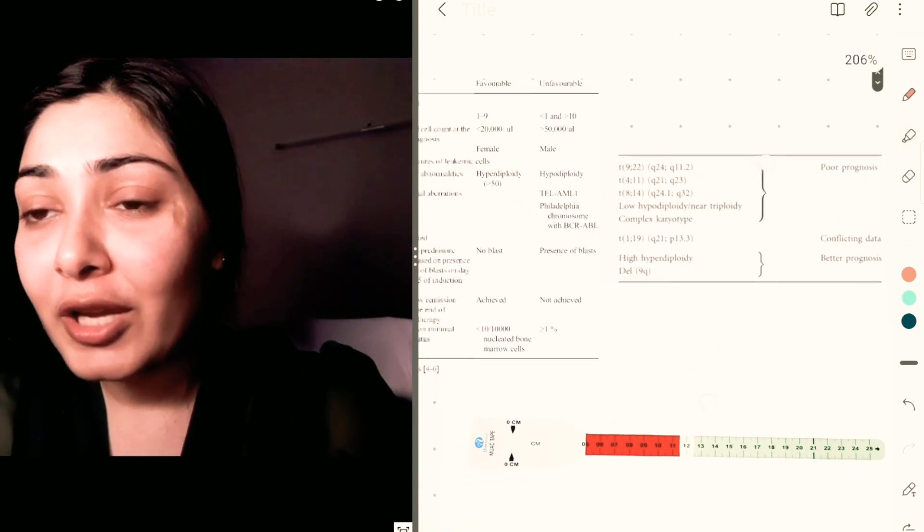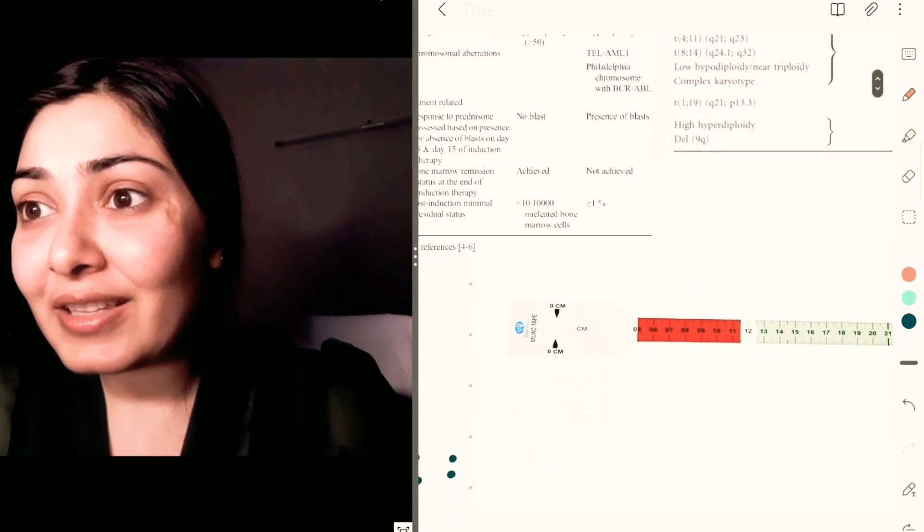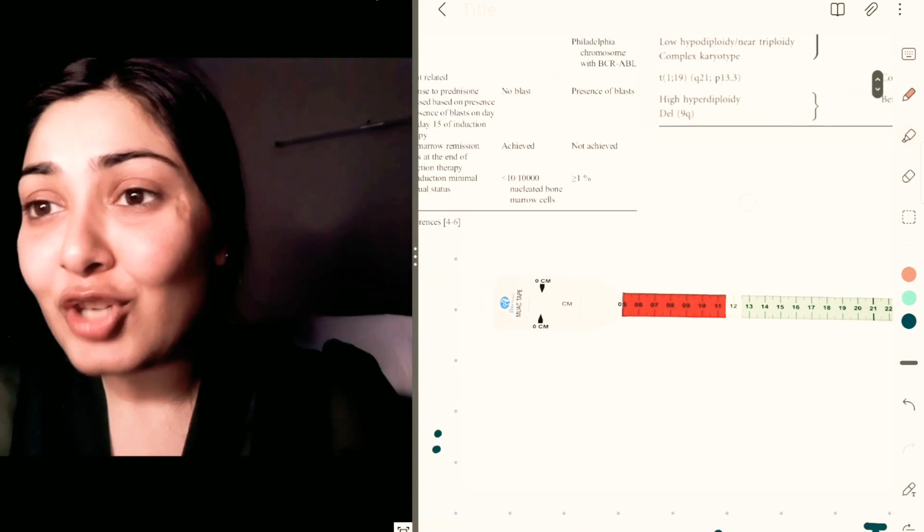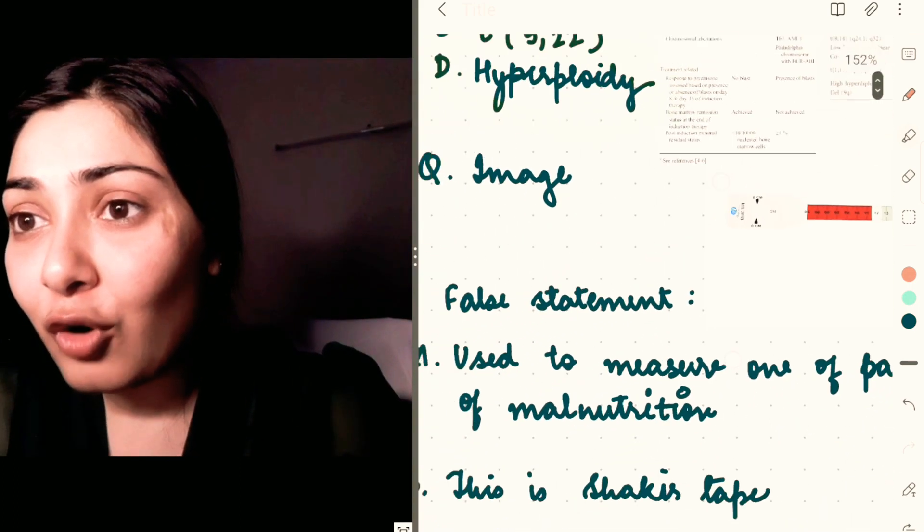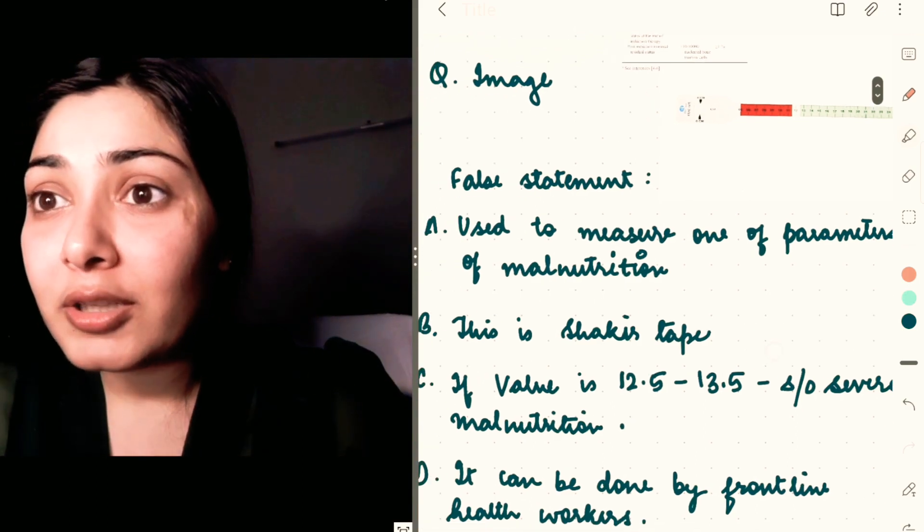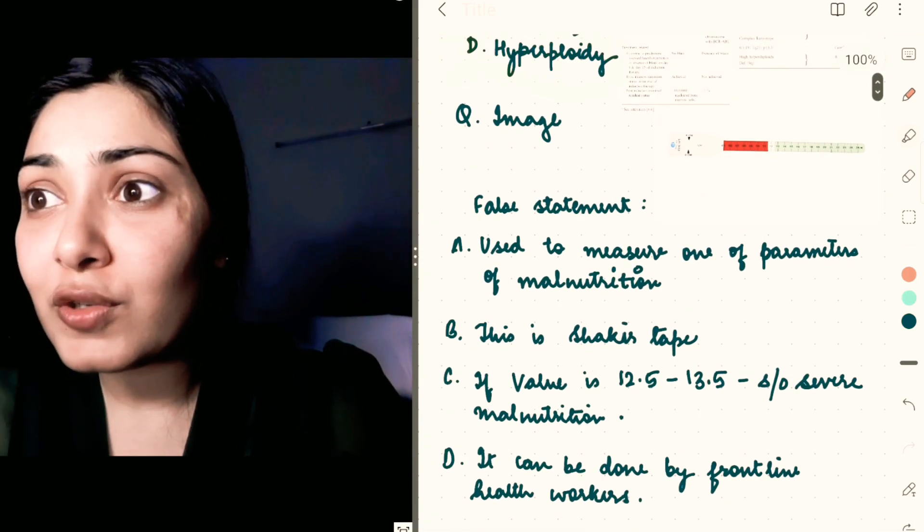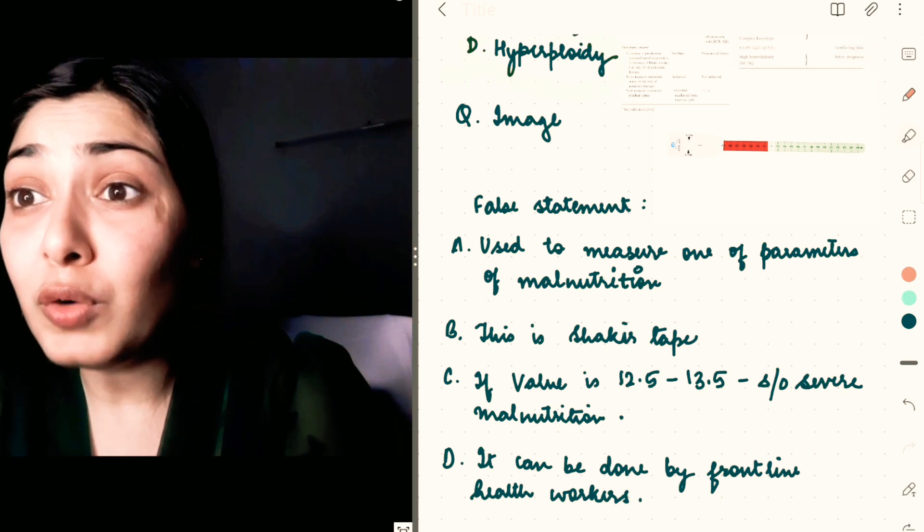Now coming to the next question, it was a really basic question. An image like this was given. We all know what it is—it is a MUAC tape. Some of the options that I could recall were about the object shown in this image.